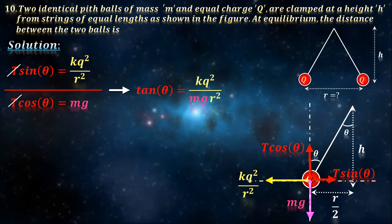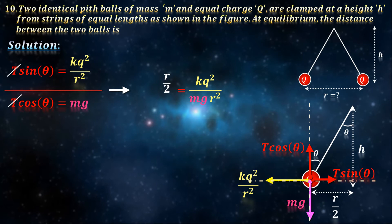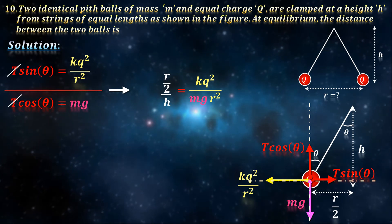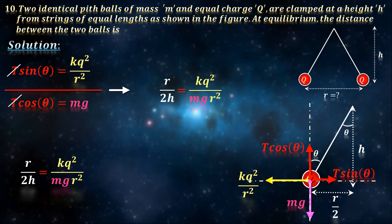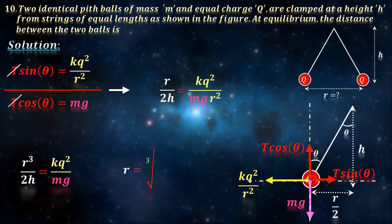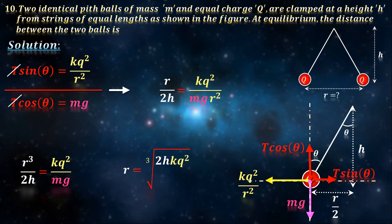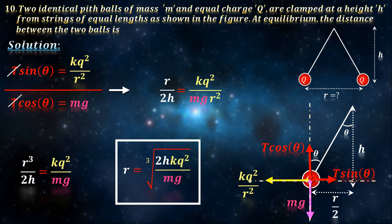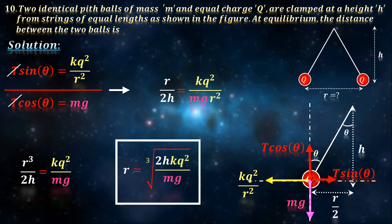And from the triangle, tan theta becomes r by 2 divided by h, making it r by 2h. Solving this, we get r equals the cube root of 2hkq squared divided by mg.